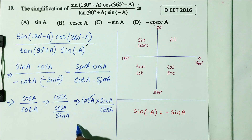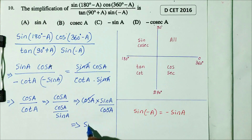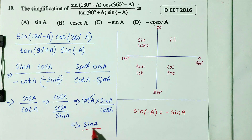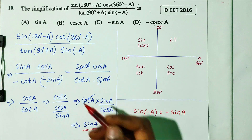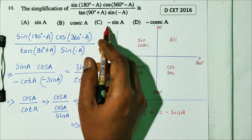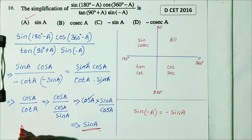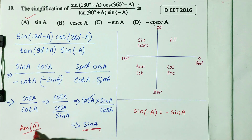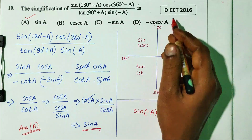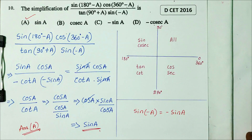Cos A cancels from numerator and denominator, leaving sin A as the answer. Option A is the right answer. DCT 2016 question.